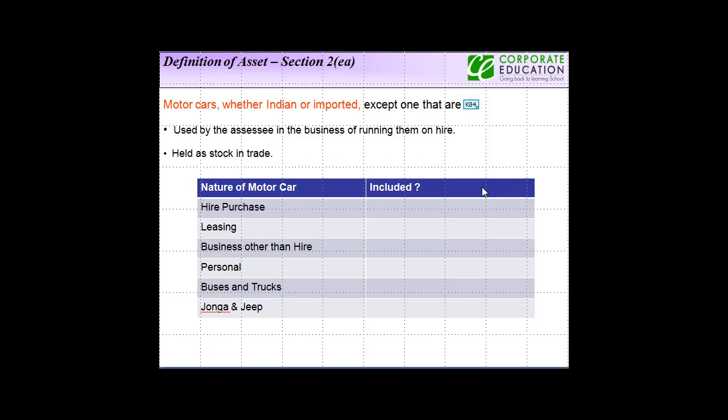The next asset which is included in the definition of asset for wealth tax purposes is motor cars. You all know that most of the businesses do have some kind of motor cars or the other.